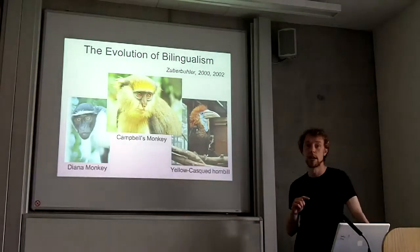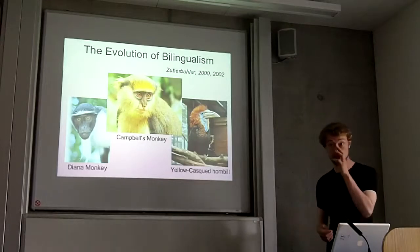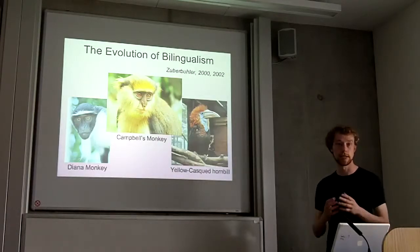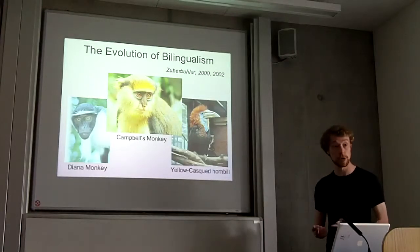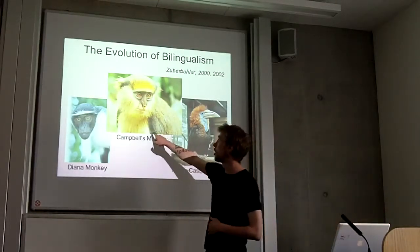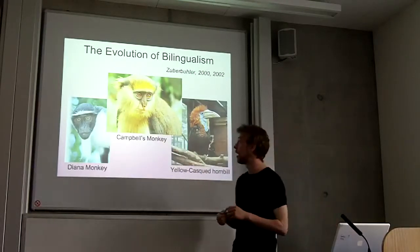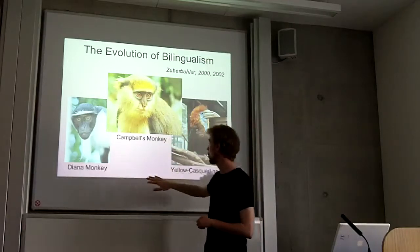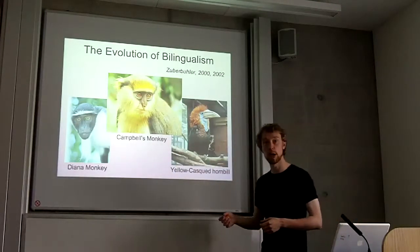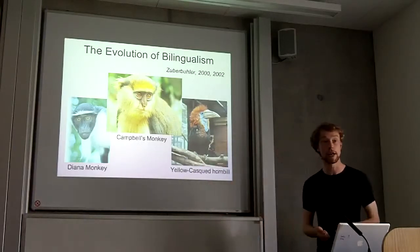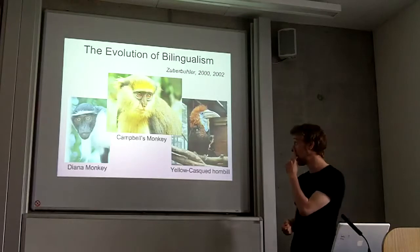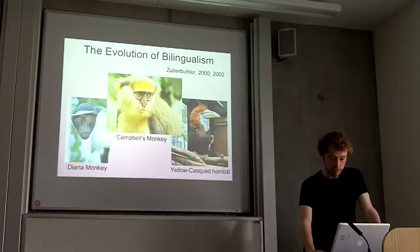I'm going to go a step further and suggest that bilingualism evolved before linguistic abilities, before language. This might sound strange, but if we see bilingualism in the broad sense as the ability to respond in the same way to two different stimuli, then it's just a kind of learning algorithm that's very useful. Here's a Campbell's monkey — they make different alarm calls for different predators in different situations. The Diana monkeys and the Yellow Casket Hornbills respond appropriately to the Campbell's monkey's alarm system — that is, they speak Campbell's. These are bilingual animals. If animals can do this, it's obviously very advantageous because they can use more information in their environment to help them survive, so this is an ability that should evolve.